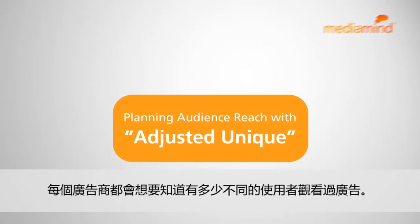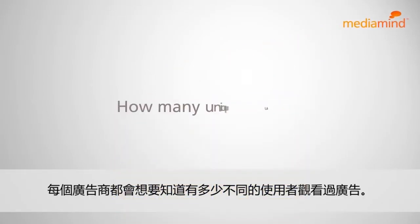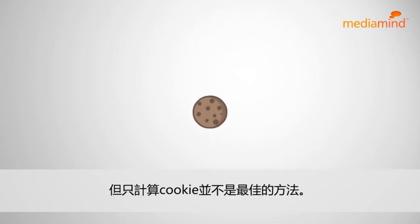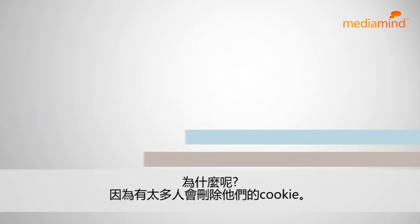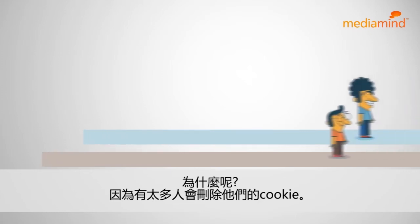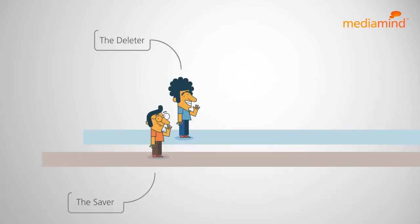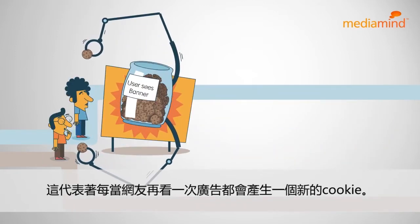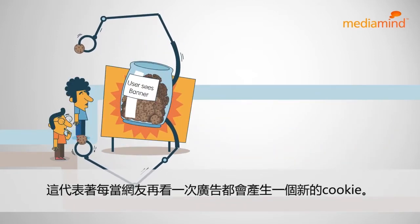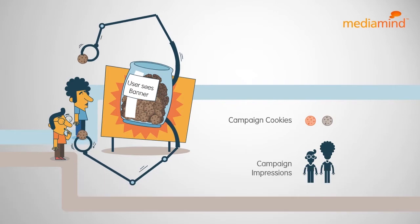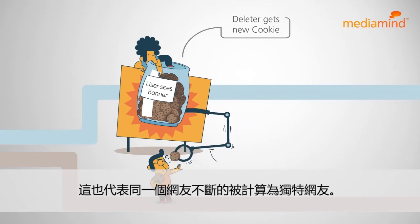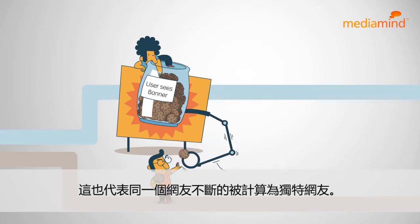Every advertiser wants to know how many unique users are exposed to a campaign. But simply counting cookies isn't the best way. Why? Because the world is full of cookie deleters, which means every subsequent impression to an ad campaign generates a new cookie — which can mean a lot of cookies for the same user, who gets counted over and over again as a new unique user.